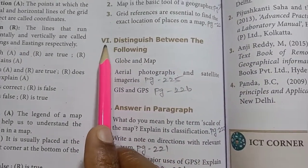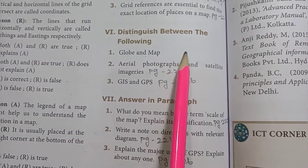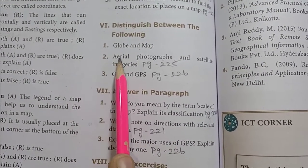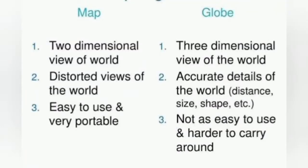Then move on to sixth Roman numeral, distinguish between the following. First one, globe and map. Map: two-dimensional view of world. Globe: three-dimensional view of the world. Second point in map: distorted views of the world. In globe: accurate details of the world, that is distance, size, shape, etc. Third point: easy to use and very portable. Globe: not as easy to use and harder to carry around.